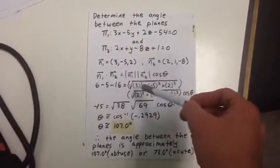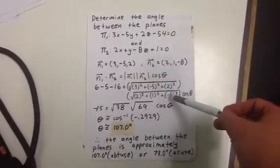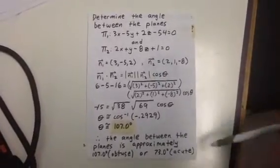So 6 minus 5 minus 16 is the magnitude of n1 times the magnitude of n2 times the cosine of the angle in between them.